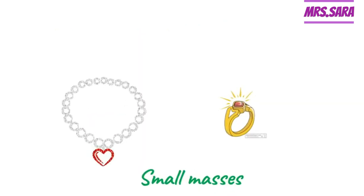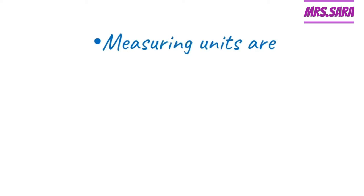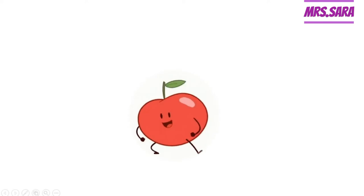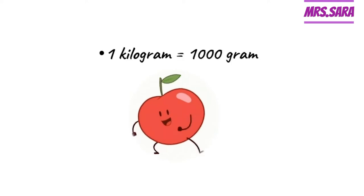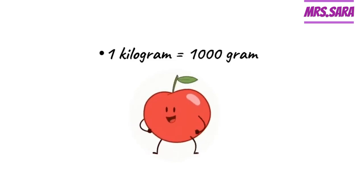How about small masses like necklace or ring? We need another measuring unit. The measuring unit of small masses is the gram. So 1 kilogram is for big mass and 1 gram is for small mass. The measuring units are kilogram for big mass and gram for small mass. And 1 kilogram equals 1000 grams.